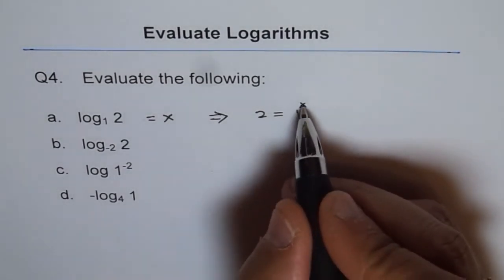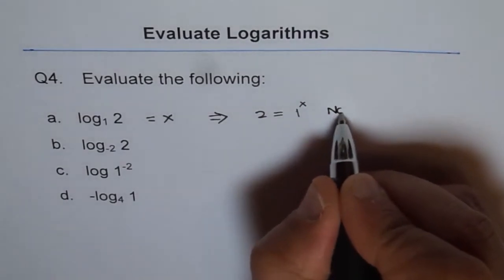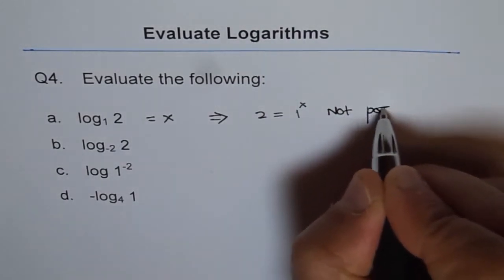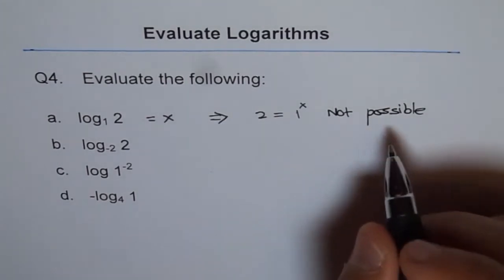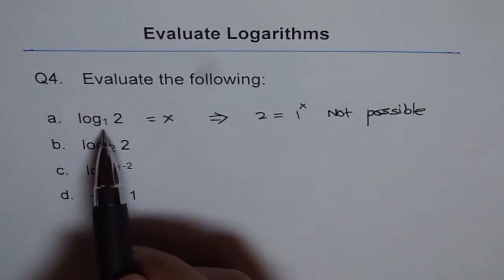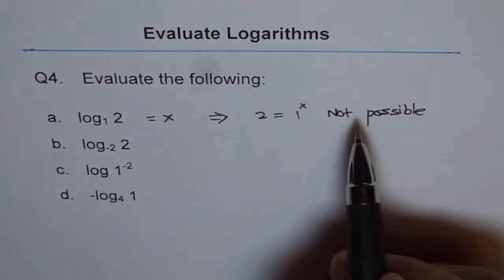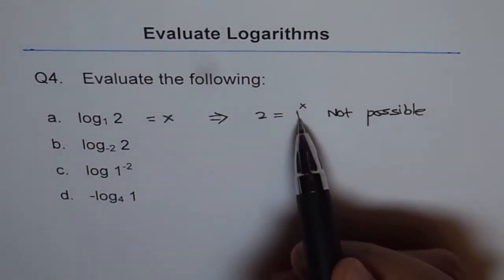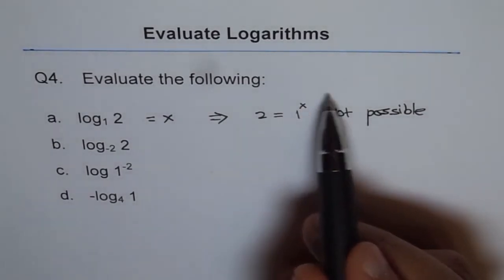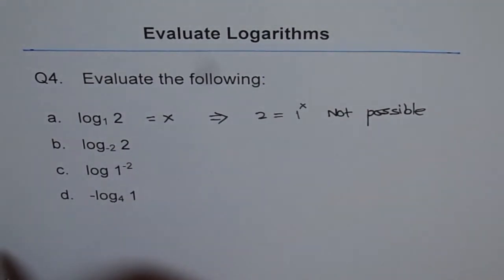Now, 1 to the power of anything is only 1. Therefore, it is not possible. So this is a very important question to understand why base of 1 is not possible. Because 1 to the power of anything will only be 1. It is never an exponential function, it is a constant function. So therefore, log to the base 1 doesn't work.